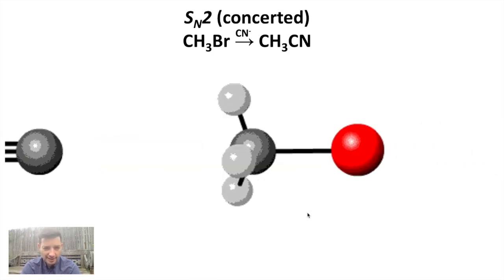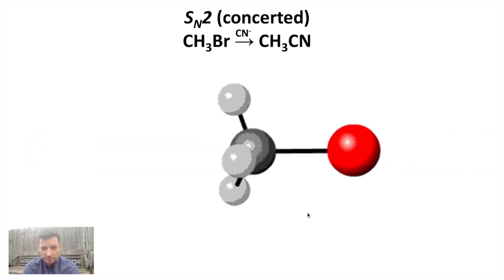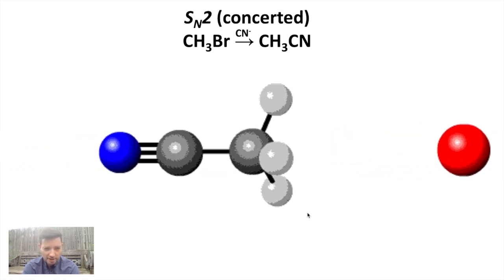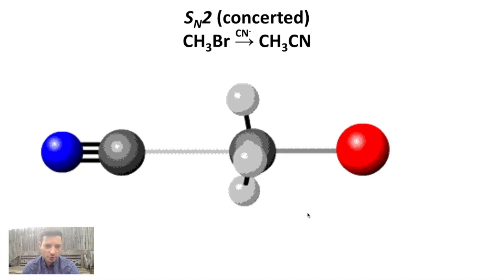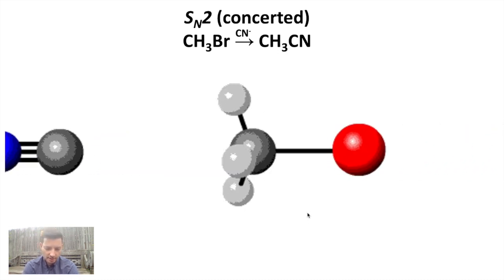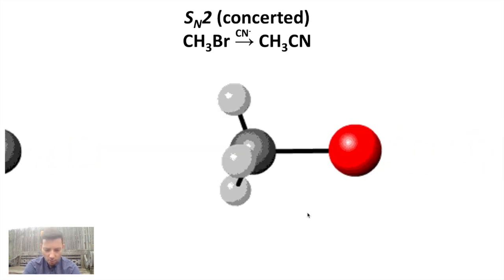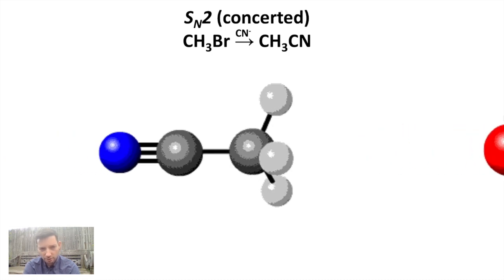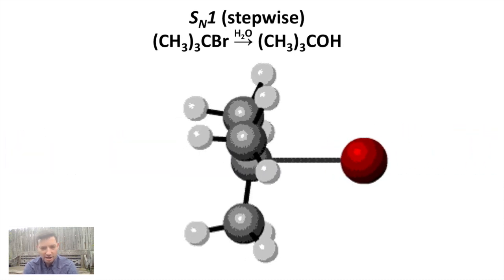Reminder, on the screen, there's what the SN2 looks like. That's an unhindered methyl halide, just bromomethane, and you have a strong, very reactive nucleophile of cyanide ion coming in and doing the substitution. Well, what happens if we have a weak nucleophile, such as methanol or water?